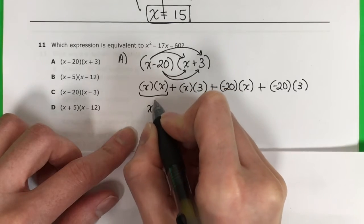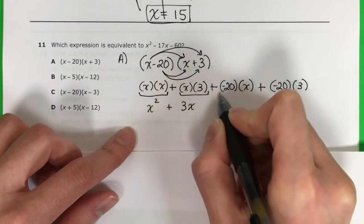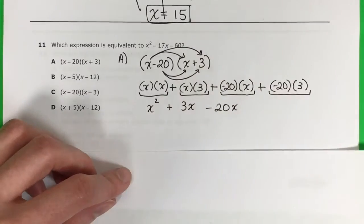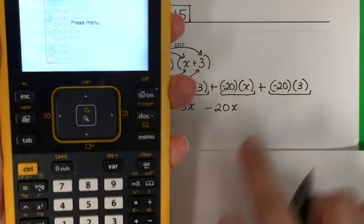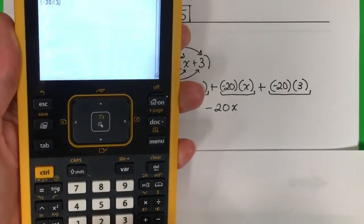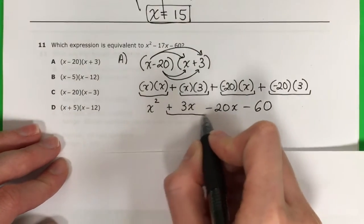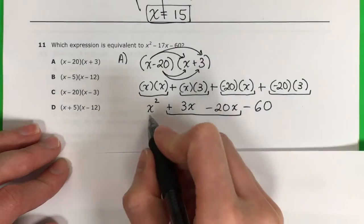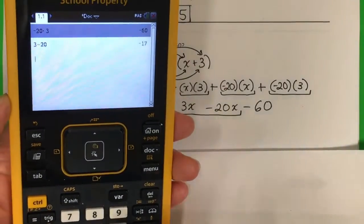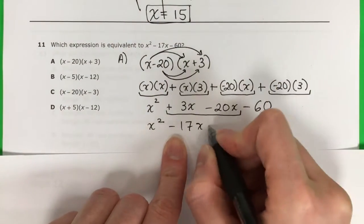x times x is x squared. Plus x times 3 is 3x. Negative 20 times x is negative 20x. Negative 20 times 3 — if you put that in the calculator — is negative 60. And always the two in the middle are like terms, so copy x squared. 3 minus 20 is negative 17. So negative 17x minus 60.